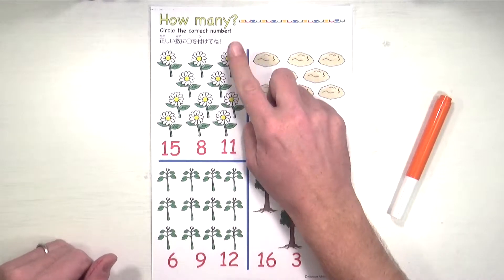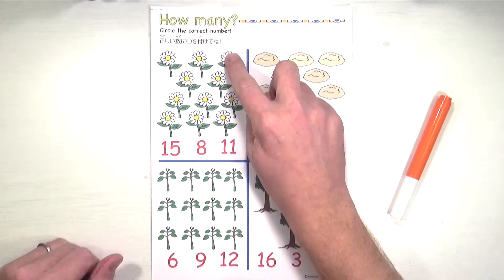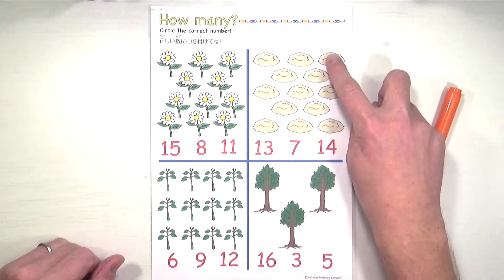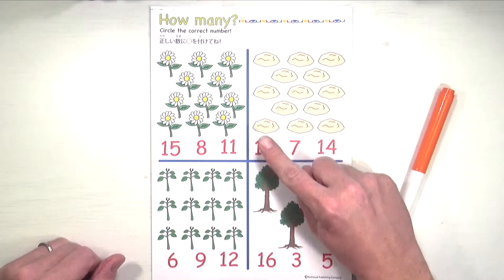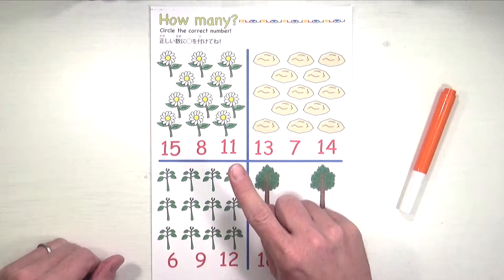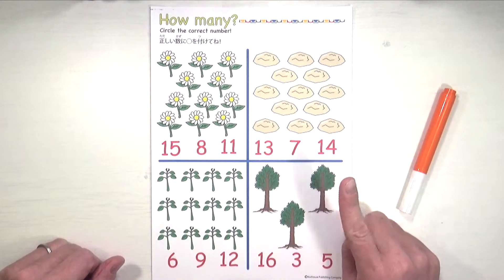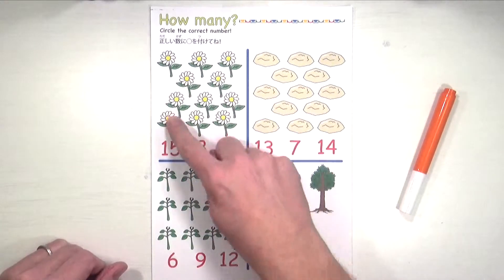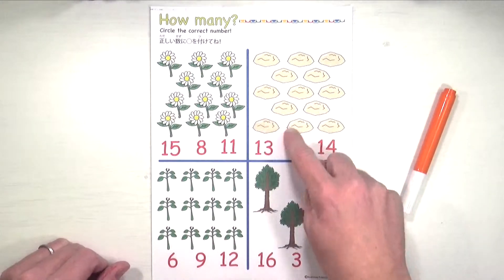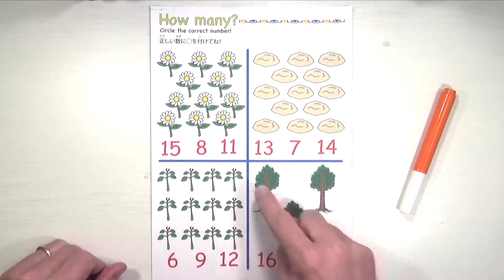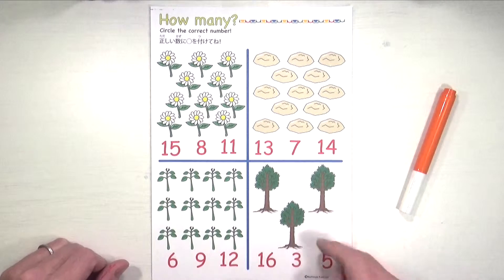Let's repeat that, shall we? Ready? It's a flower. It's a rock. It's a plant. It's a tree. They're flowers. They're rocks. They're plants. They're trees. Nice. That was pretty good.